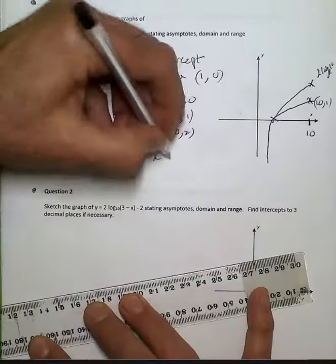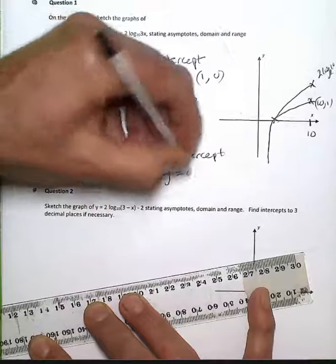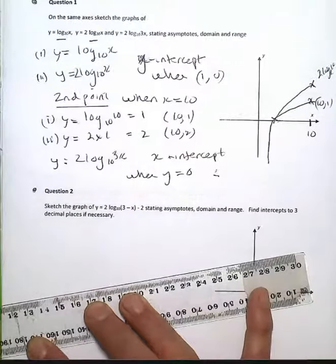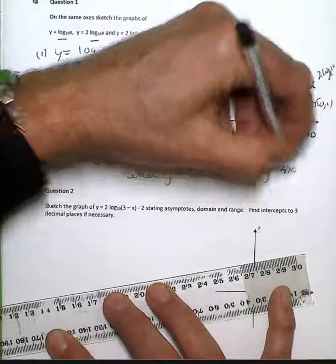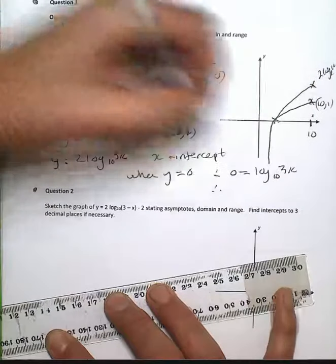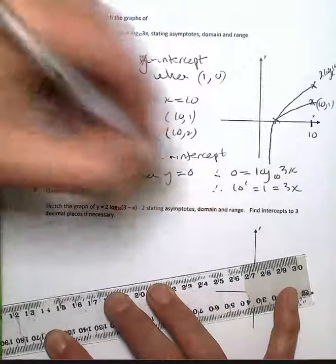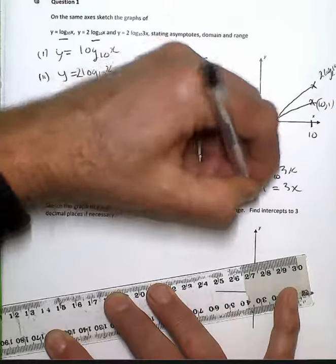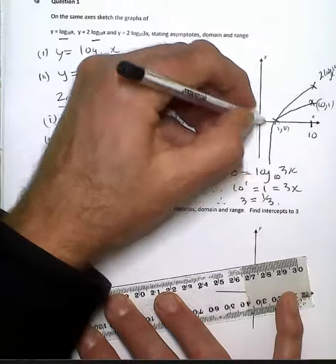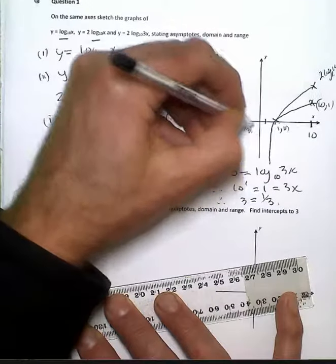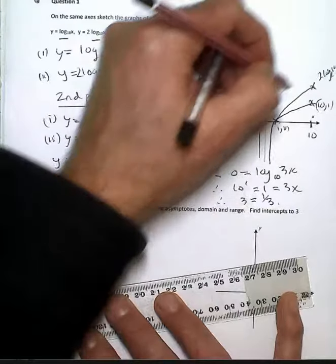the x-intercept, when y is equal to 0, so I therefore have 0 is equal to log 3x to the 10, so therefore, 10 to the 0, which is 1, is 3x, and x is equal to 1 third. So instead of 1, 0, I'll have 1 third, 0, and my graph will hook up like so.